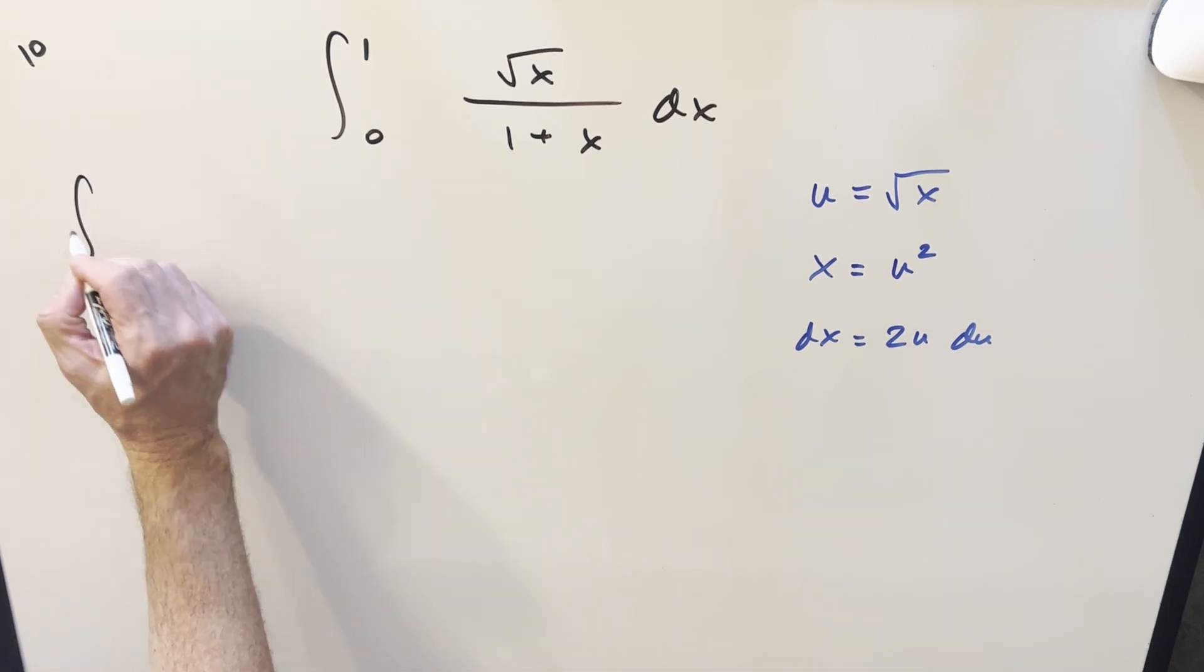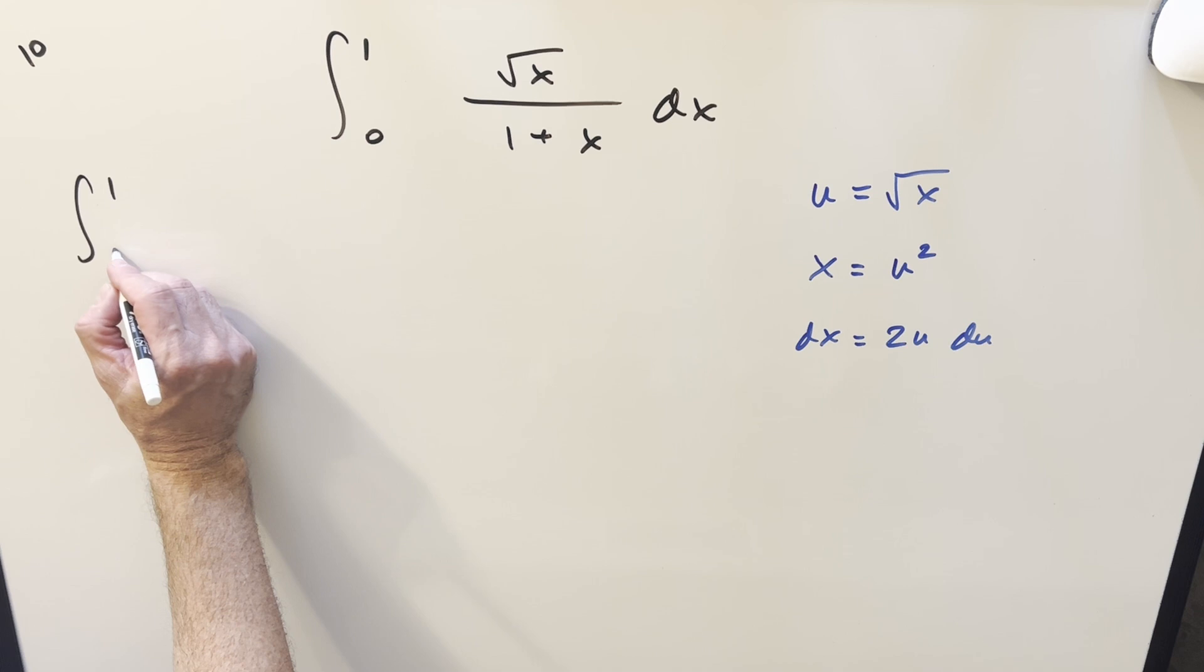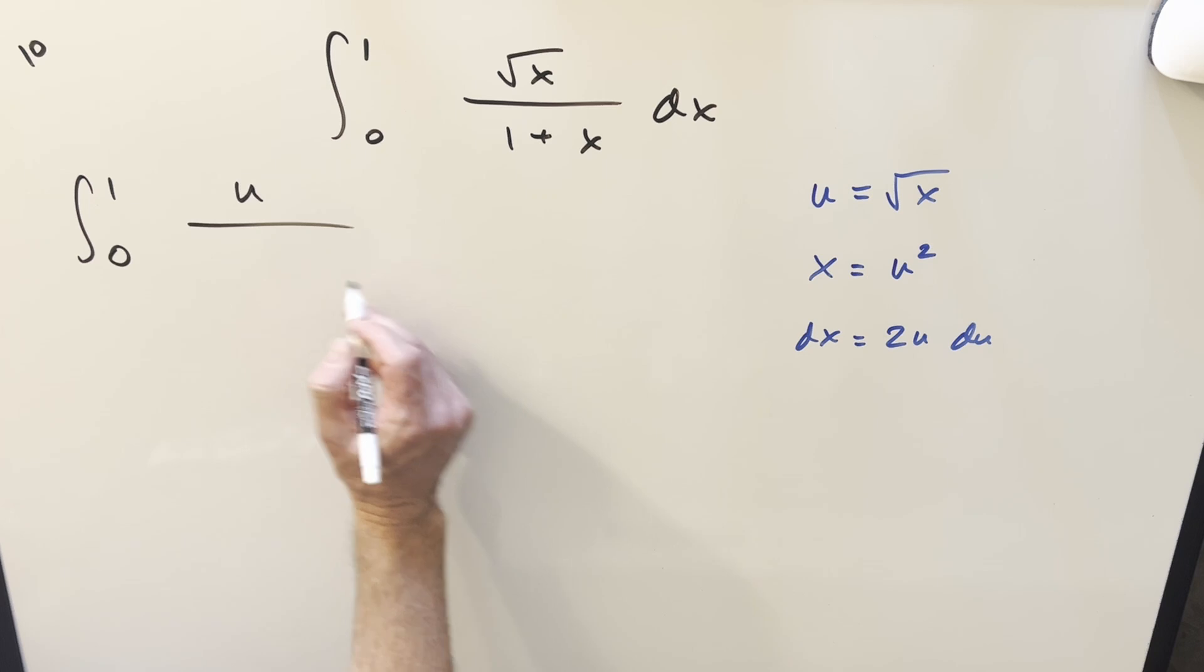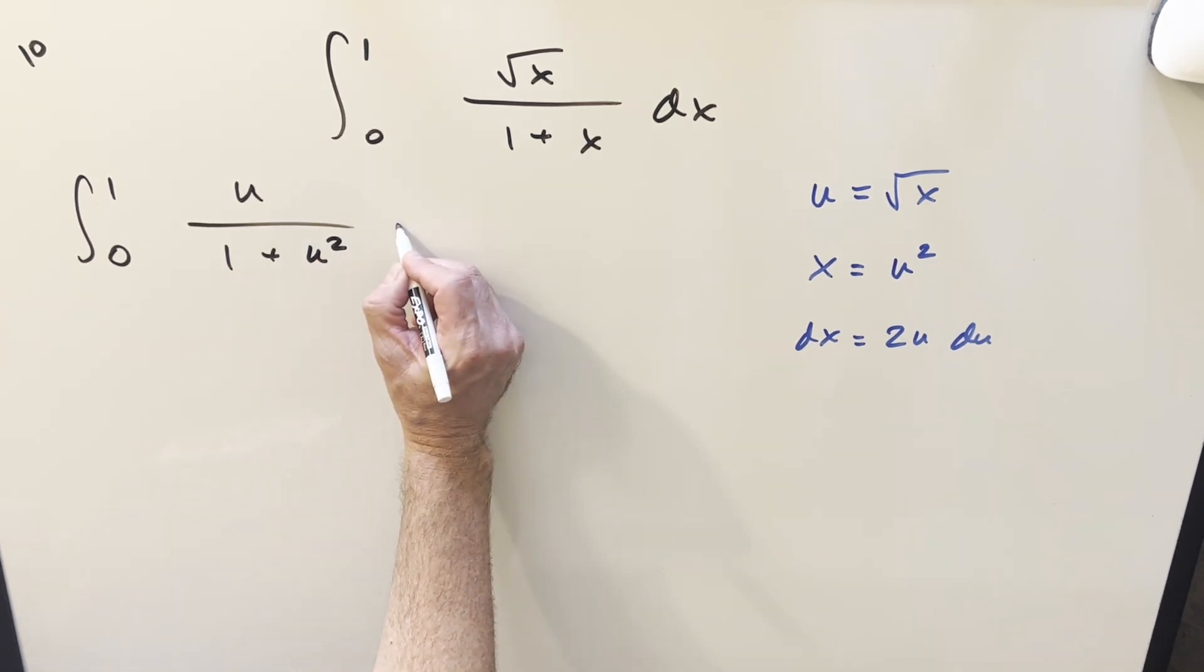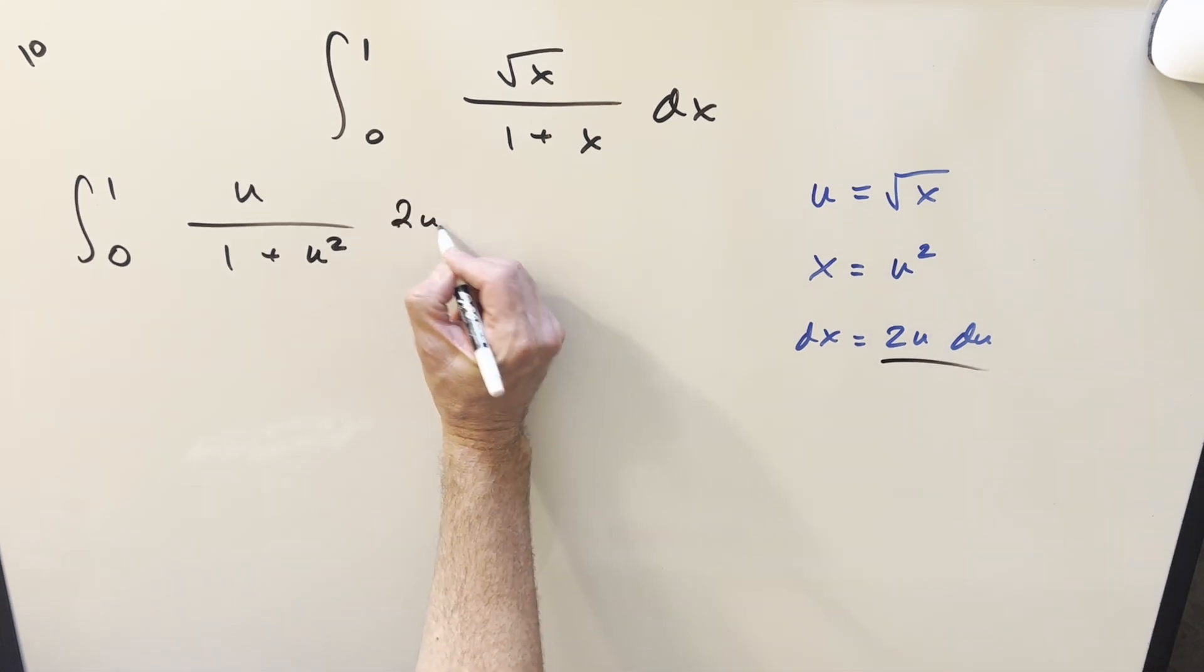now we'll take a derivative dx is going to be just 2u du. We'll go ahead and substitute first, plugging in 1. Square root of 1 is 1. Plug in a 0, we're still at 0. So transform all this stuff for square root of x. That's going to be u. Then our x value is u squared. So we have 1 plus u squared. dx is going to be this 2u du.